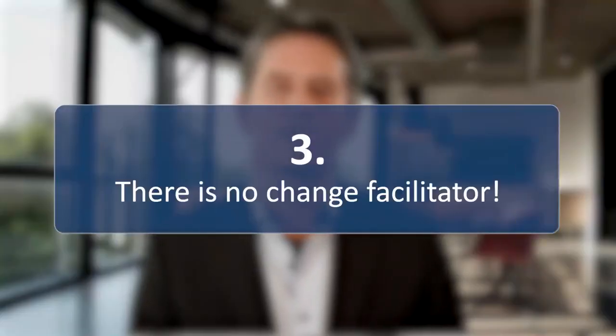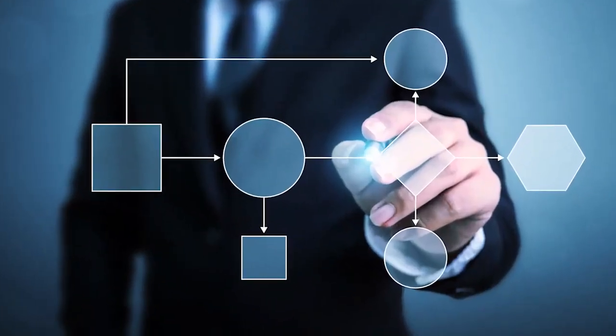Number three: there's no change facilitator. At some point a process of change will mostly go through phases in which there are setbacks or the whole project even comes to a standstill. If a strong supporter is missing in such a phase — someone who's in charge — then the whole project is doomed to fail. Assign someone who has clear responsibility for the change project. And very importantly, make sure that you provide him with the necessary resources and powers.